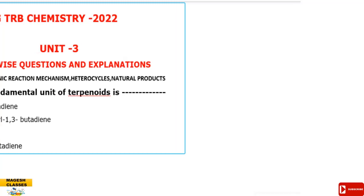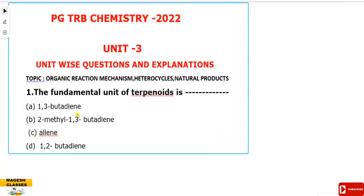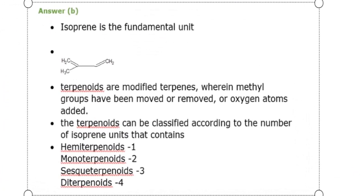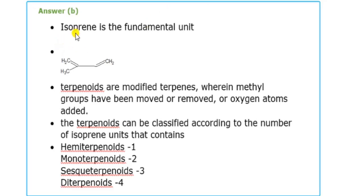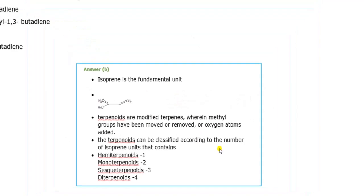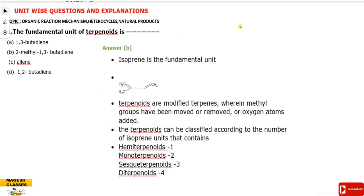Question number 1. The fundamental unit of terpenoids is: (1) 1,3-butadiene, (2) 2-methyl-1,3-butadiene, (3) aline, or (4) 1,2-butadiene. The answer: the fundamental unit of terpenoids — for the basic structure — is based on 1,3-butadiene. In butadiene, there is a methyl group substitution, giving the isoprene unit.